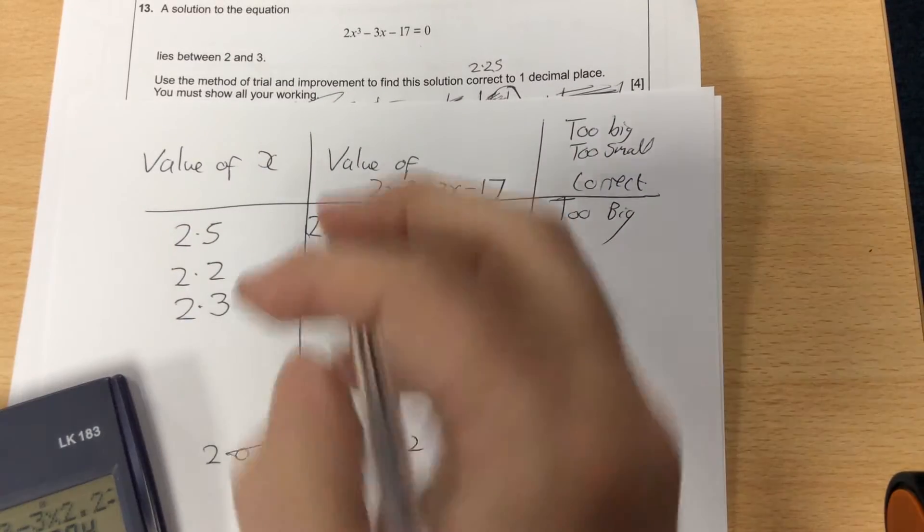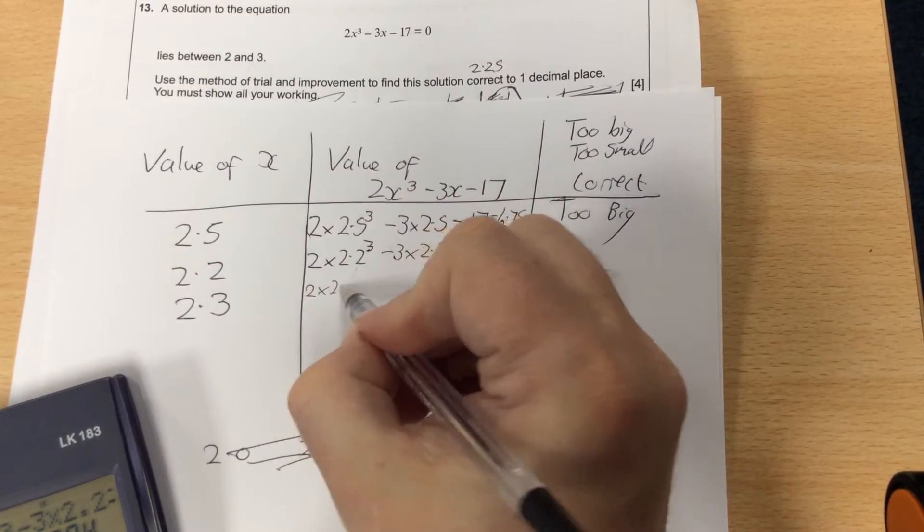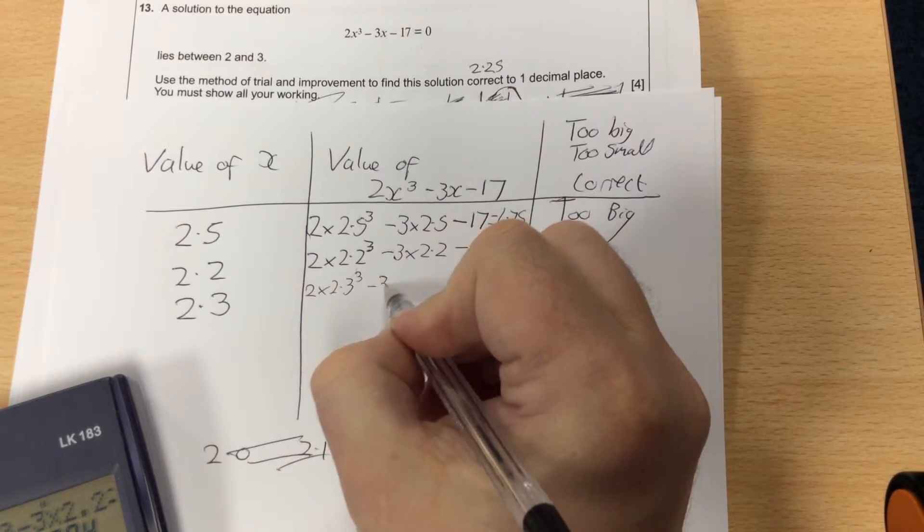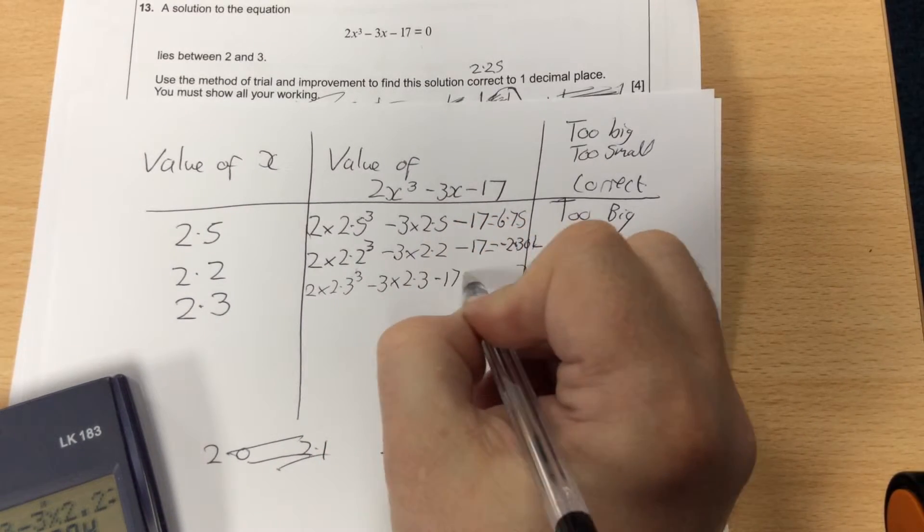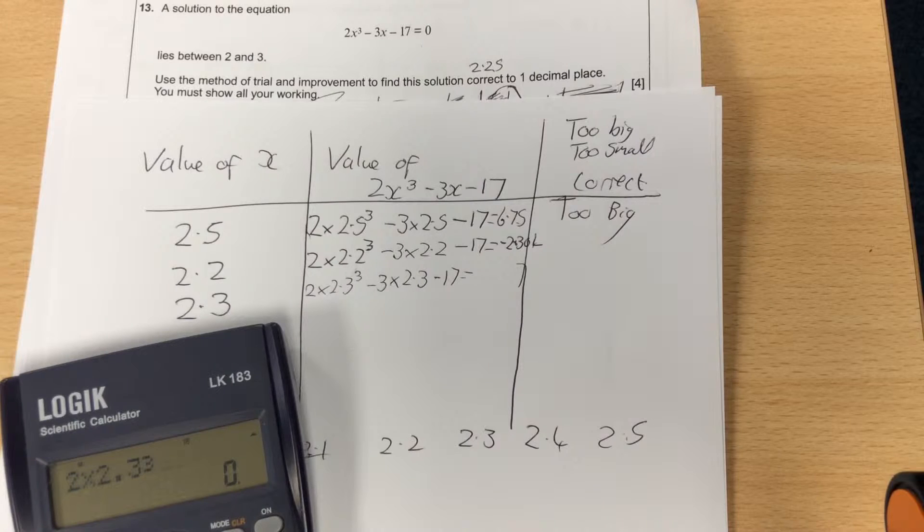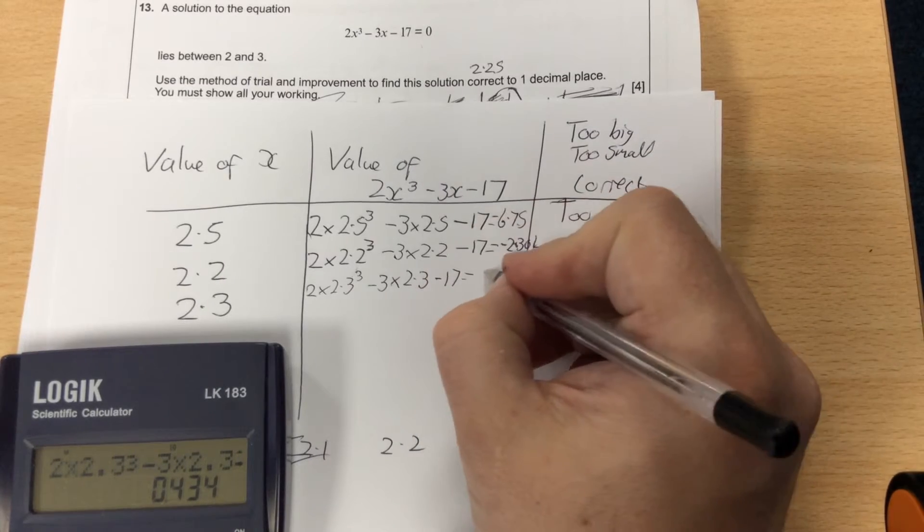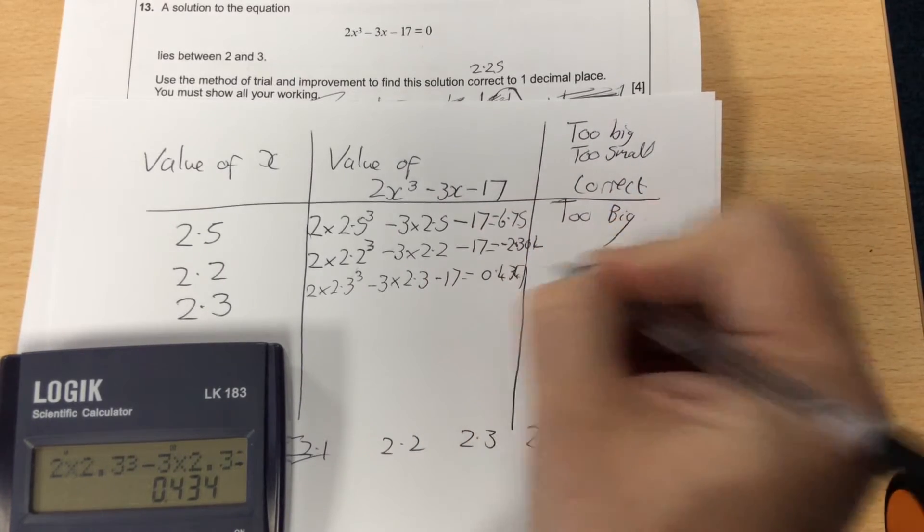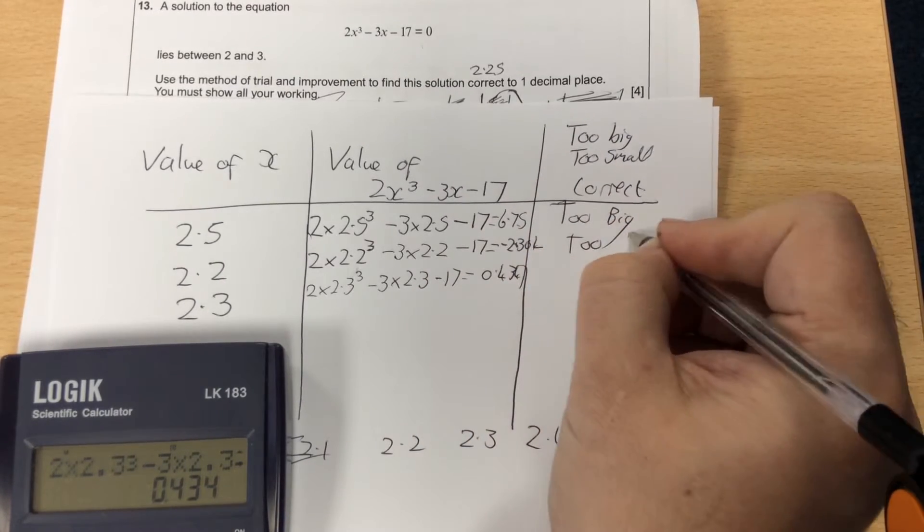So I'm going to try 2.3. I'm going to try 2 times 2.3³ - 3 times 2.3 - 17. So it becomes 2 times 2.3³ - 3 times 2.3 - 17. This comes up as 0.434, which is too big.